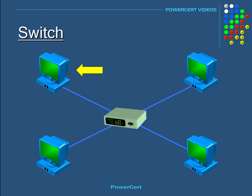So as an example, if this computer here wanted to communicate with this computer over here, the data packet arrives at the switch, and then the switch will look at its table of MAC addresses and matching ports, and deliver the data to the correct port. So the data packet would only go to that computer. That's the major difference between a hub and a switch. As a result, switches are far more preferred over hubs because they reduce any unnecessary traffic on the network.